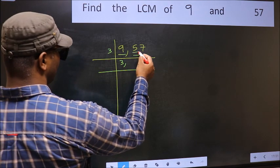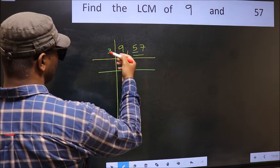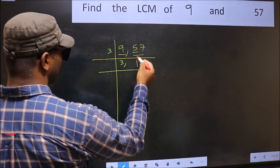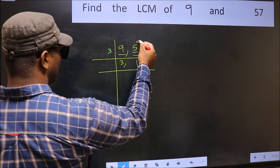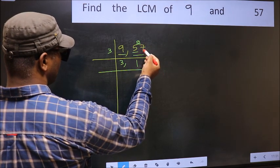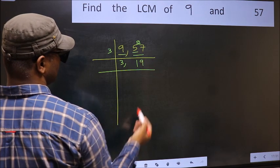First number, 5. A number close to 5 in the 3 table is 3 times 1 is 3. 5 minus 3 is 2, 2 carried forward, 27. When do we get 27 in the 3 table? 3 times 9 is 27.